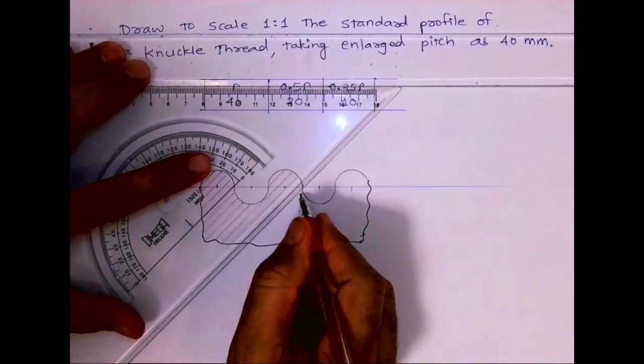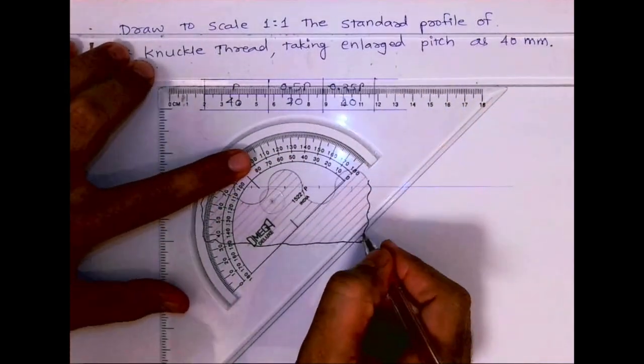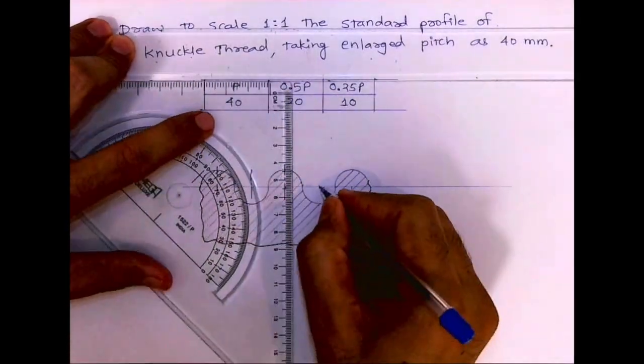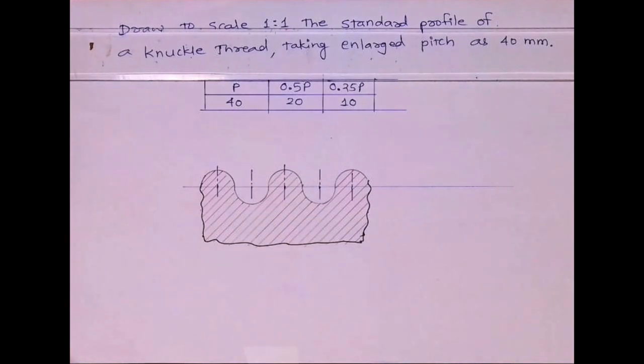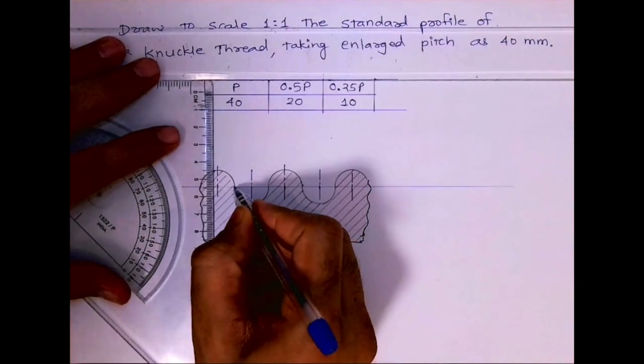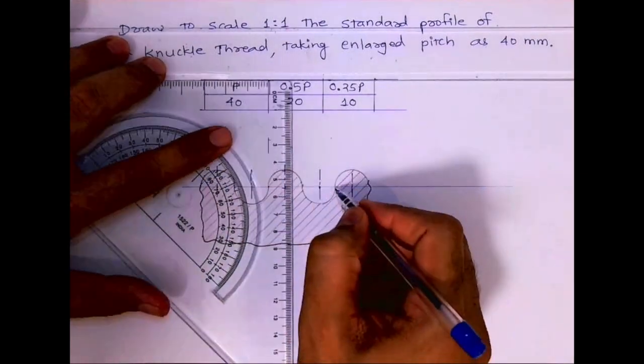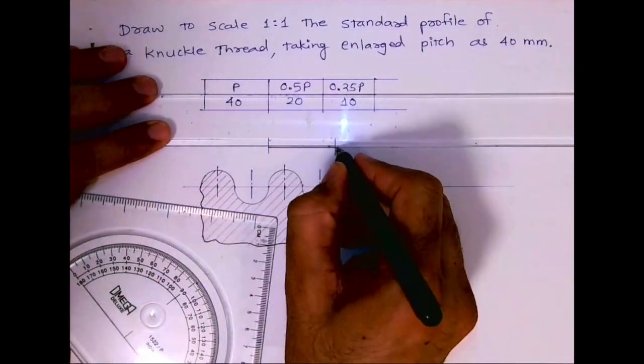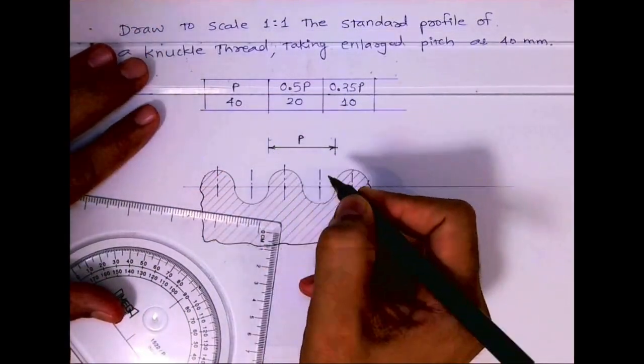Now after this, what we need to do is show dimensions. So you can show P, 0.5P, and 0.25P. Thank you.